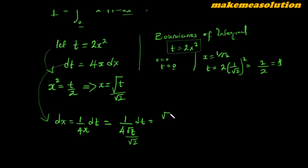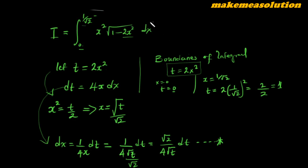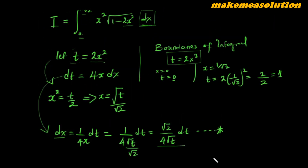When you evaluate this, you get dx equals root 2 over (4 root t) dt. We keep this for reference. Whenever you're making substitutions in an integral, you have to be conscious about this. In substituting t as 2x squared, the integral changes its boundaries and also changes the variable of integration — we transform from the x domain to the t domain.